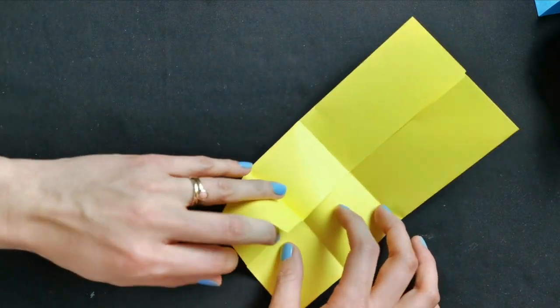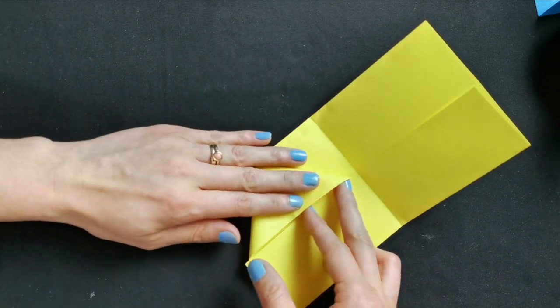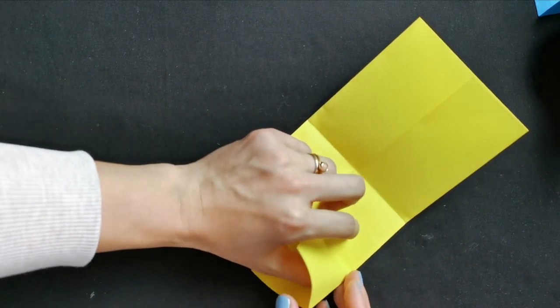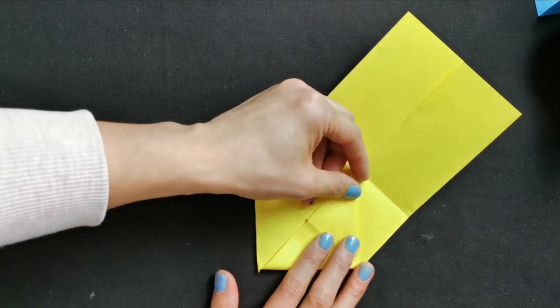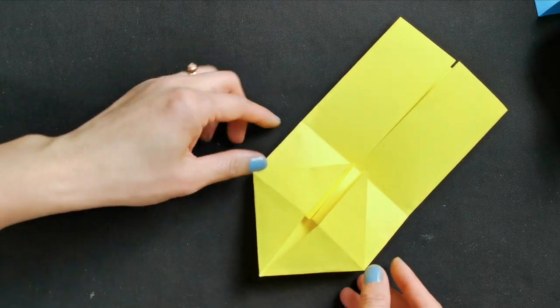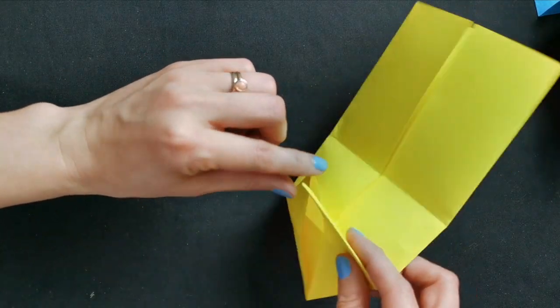Now open it up, use one of this top square, open up to be a triangle like a pocket. And then you push, you lift these two ears up.